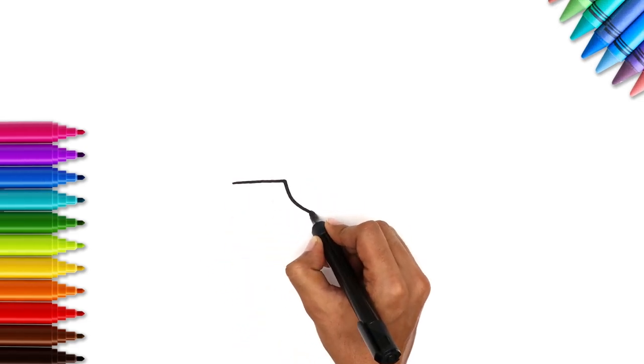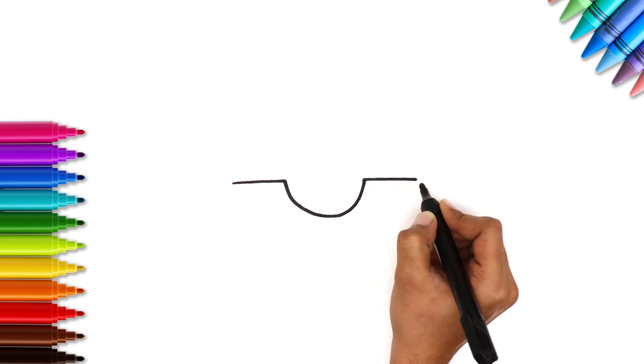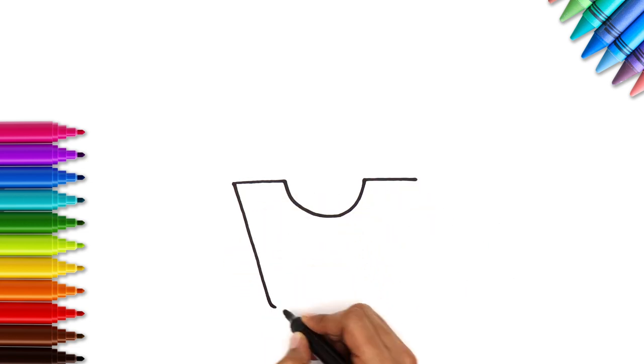Start with a line and a U and another line. Now let's complete the box.